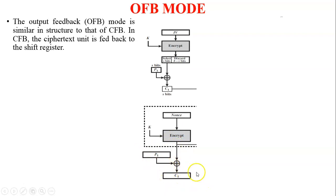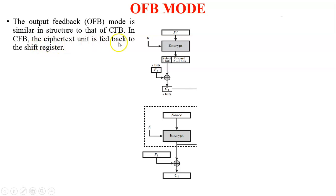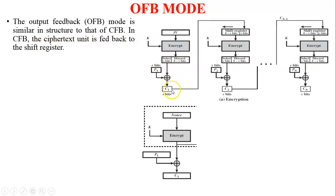In CFB mode there are only 8 bits of ciphertext output, whereas here in OFB there are 64 bits of ciphertext output. Now in CFB, the ciphertext unit is fed back to the shift register. See in the figure: ciphertext C1 is fed back to the shift register for the second process of encryption.